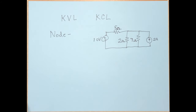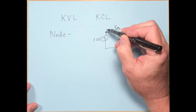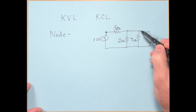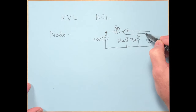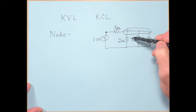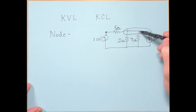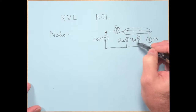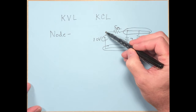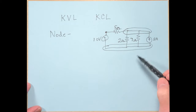Look at this circuit and see if you can figure out the number of nodes. There's a node where these two elements connect together. Over here, you might wonder if there are multiple nodes — but no, all of those connections represent one electrical point with four elements connected together. Down here, all those elements are also connected together. So there are three nodes total: one where only two elements connect, and two where more elements connect.